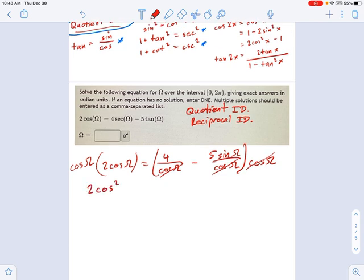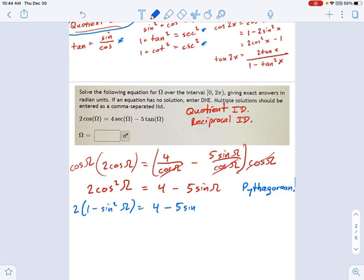We don't know what to do because I can't factor it. There's no GCF. Trinomial factoring is not going to work too well because there's different functions. Now we use a Pythagorean identity. So let's change ink here. This is a Pythagorean substitution I need to make. Looks like I can just say 2 times 1 minus sine squared omega equals 4 minus 5 sine omega.